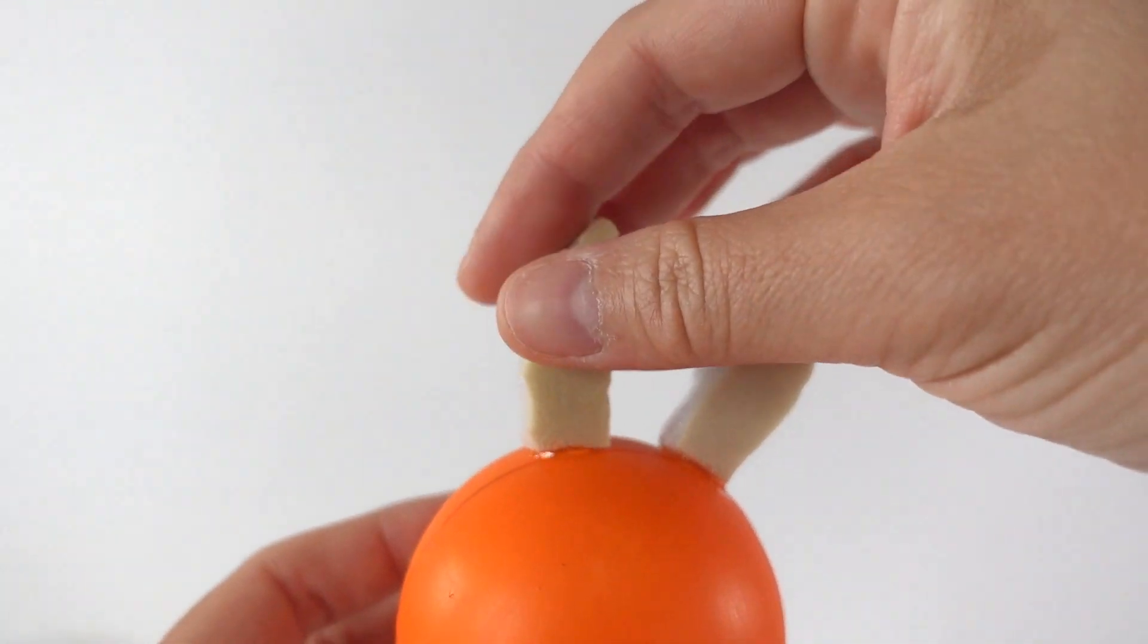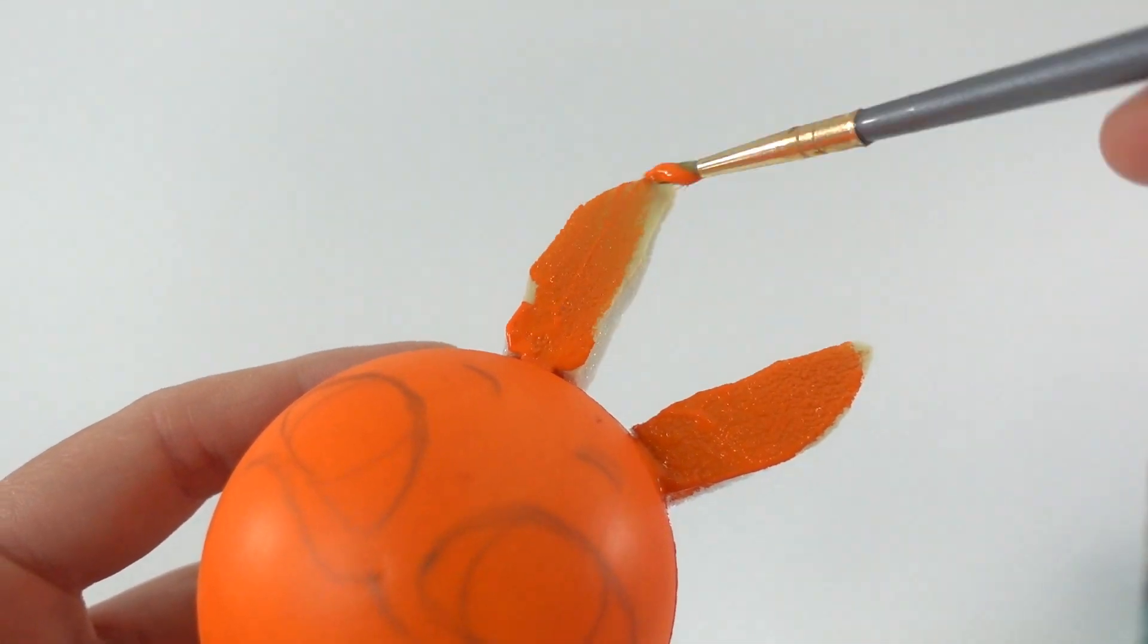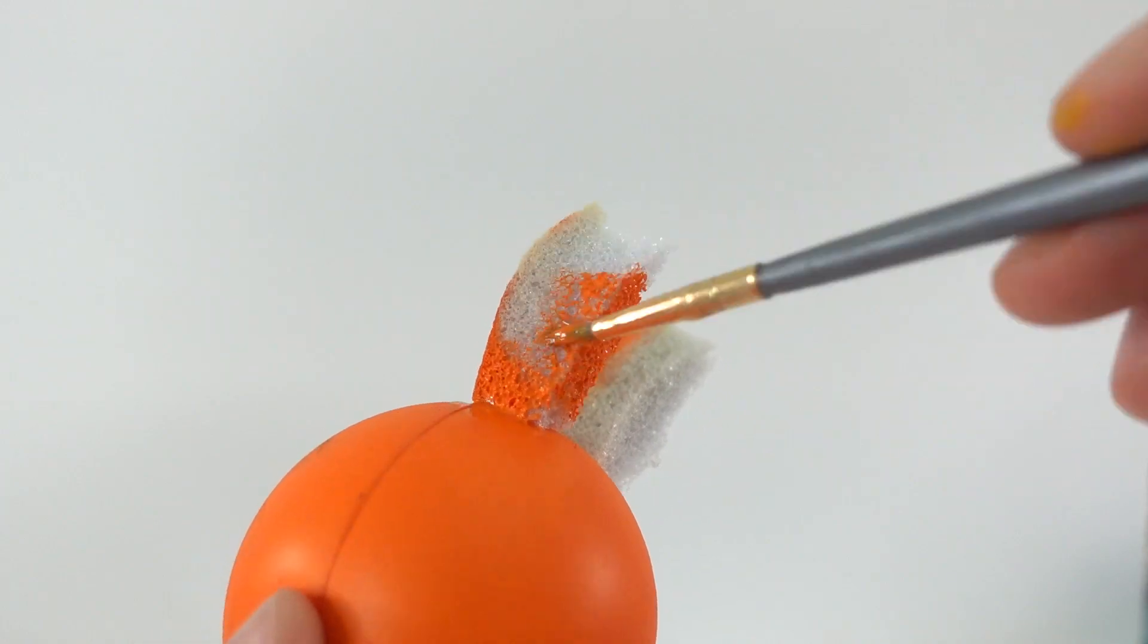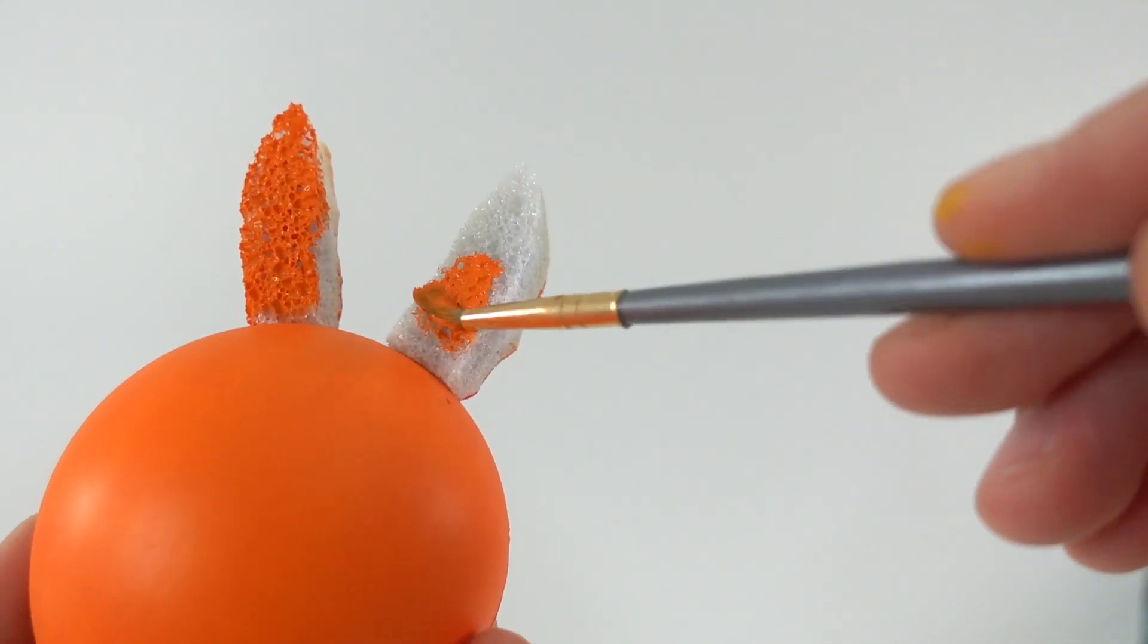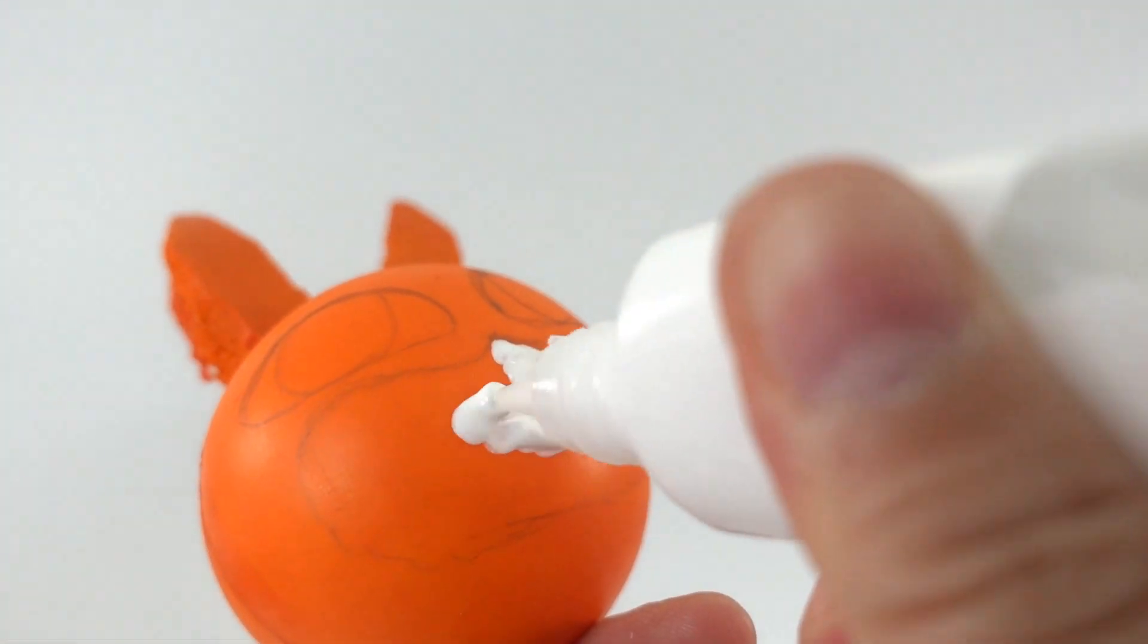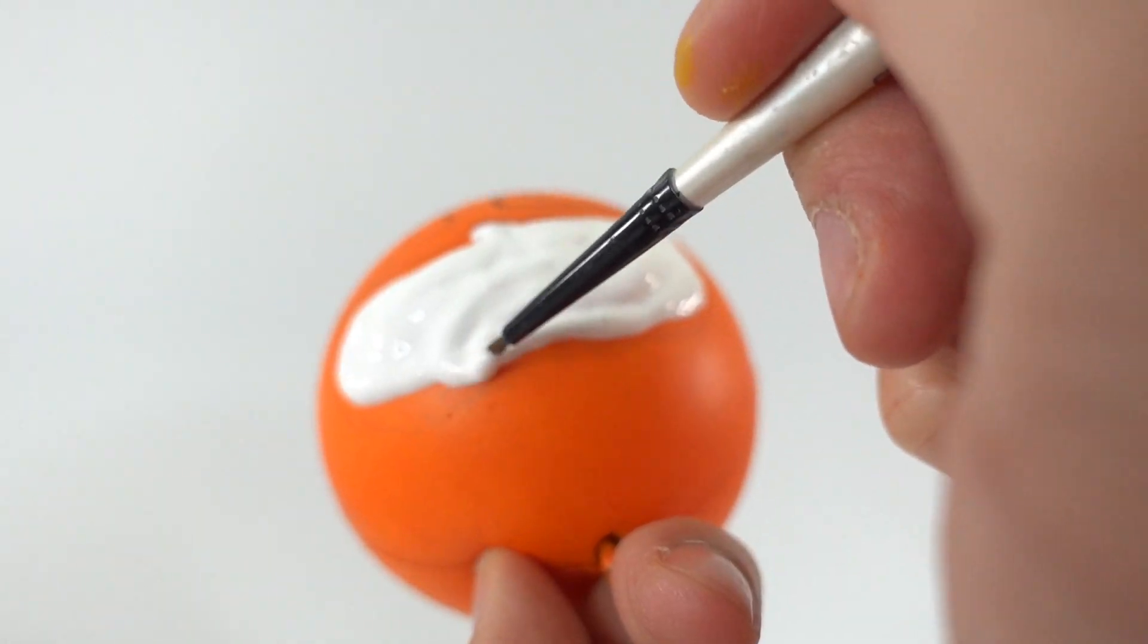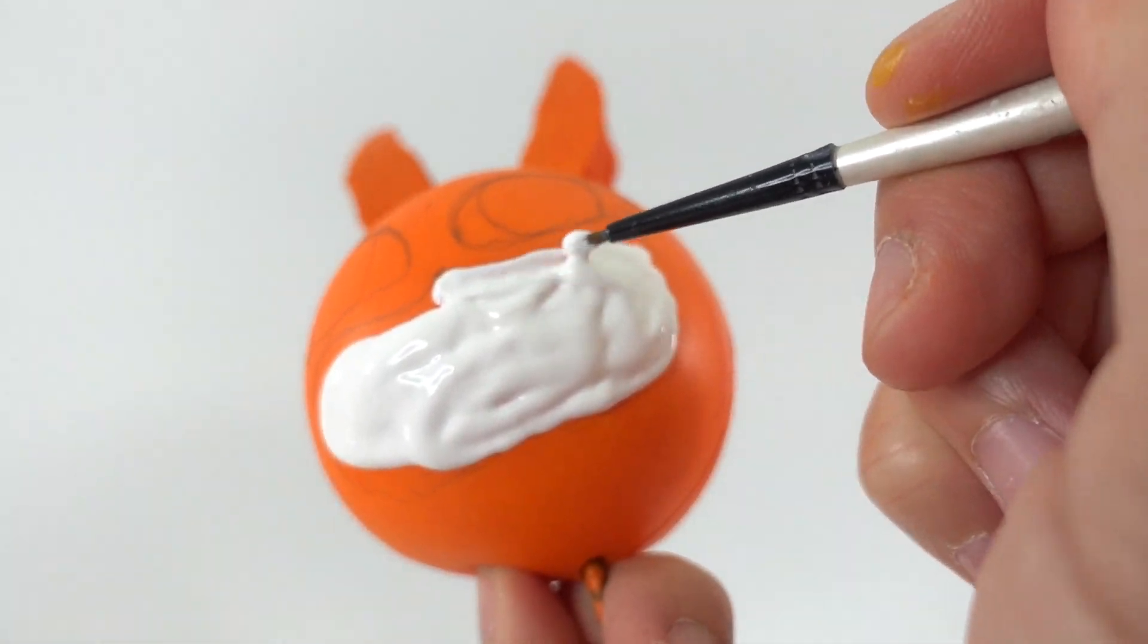After the glue is dry, we're going to paint them orange. I've gone ahead and penciled in the eyes. Now we're going to take white and paint the snout area. We're going to make this very thick so that it completely covers the orange.